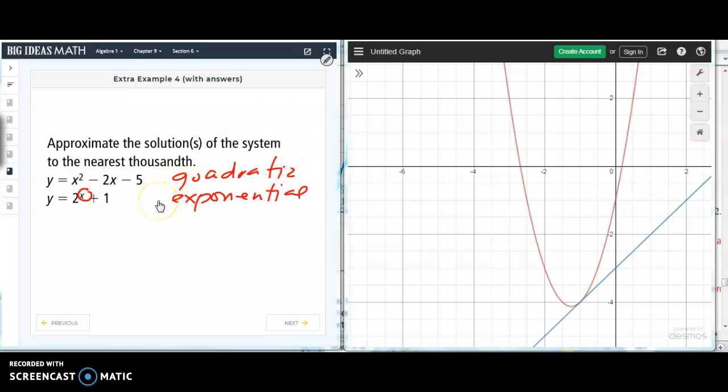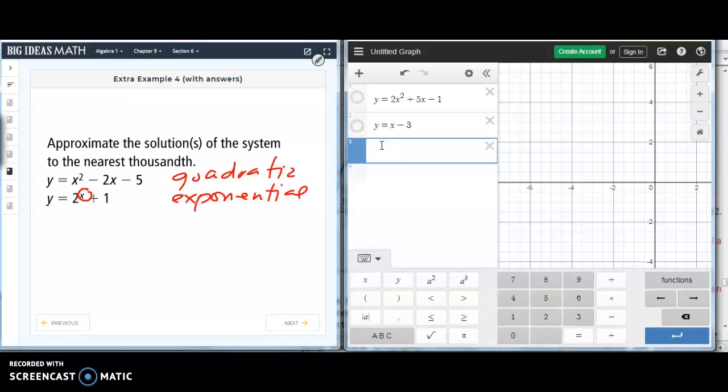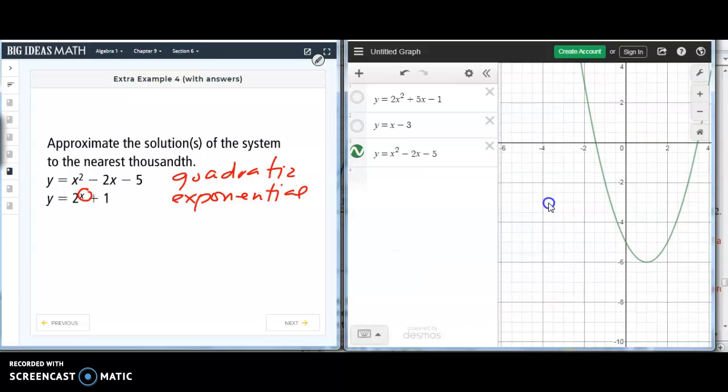So, what we're going to do is use graphing to approximate the solution to the system. So, let's unclick these, so you can hide them for now. Let's type in the function, x squared minus 2x minus 5. It's a parabola facing up.